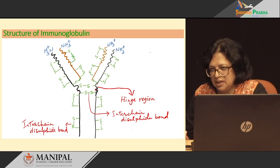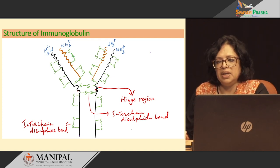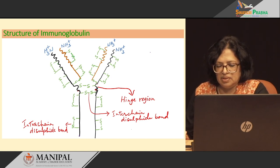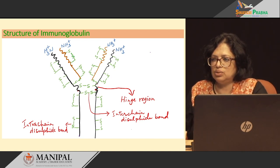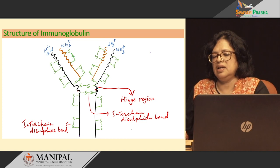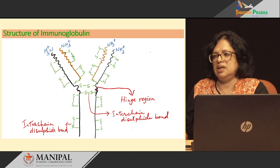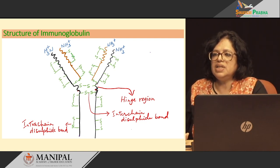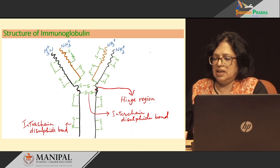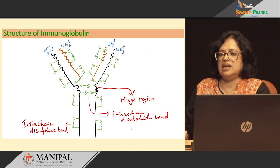In one immunoglobulin, we have 4 chains: 2 heavy chains, which may be any of the G, A, M, D, or E type, and 2 kappa chains or 2 lambda chains. So totally we have only 4 chains in an immunoglobulin molecule. In between the heavy chain and the light chain also, you see some SS bonds — these are again the disulphide bonds.